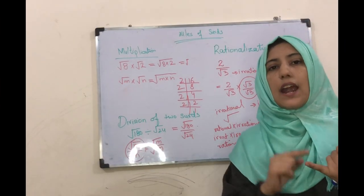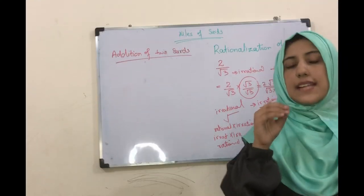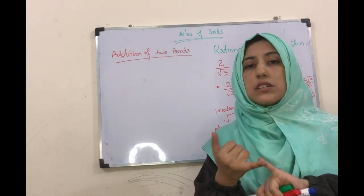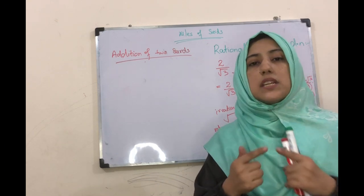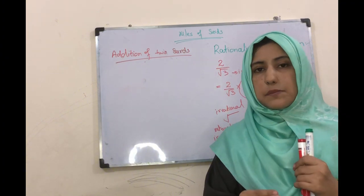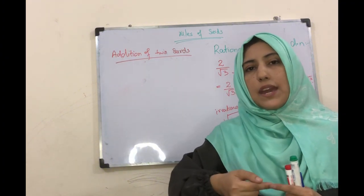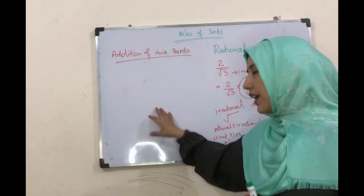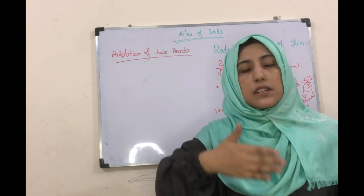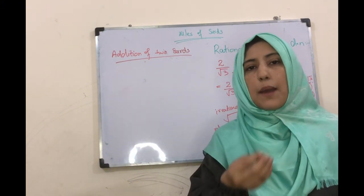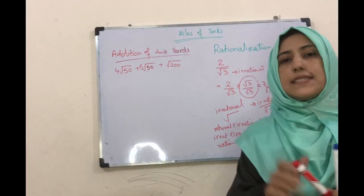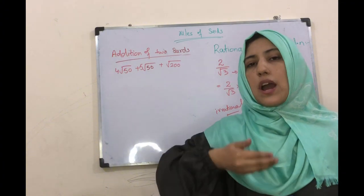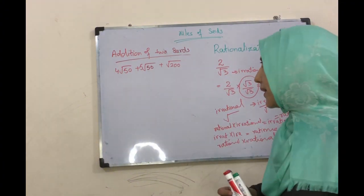تو چلتے ہیں difference and addition of two surds کی طرف۔ Addition of two surds میں - میں نے آپ کو اپنی previous video میں بھی بتایا تھا کہ addition of two surds کب possible ہوتی ہے - جب ہمارے پاس similar surds ہوتے ہیں۔ اگر similar نہیں ہے تو you have to make the surds similar and then you have to simplify the question. I am writing the question over here and I will tell you how to make the surds similar اور پھر اس کو solve کرتے ہیں by addition of two surds. یہاں آپ چیک کیجئے کہ ہمارے پاس similar surds نہیں ہیں تو first you have to make the surds similar.